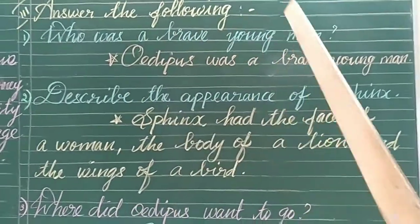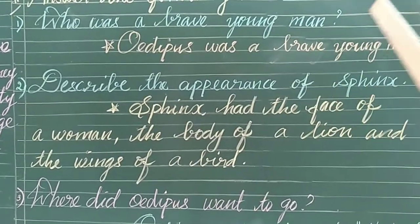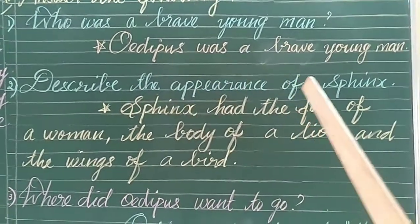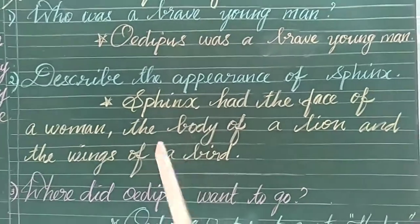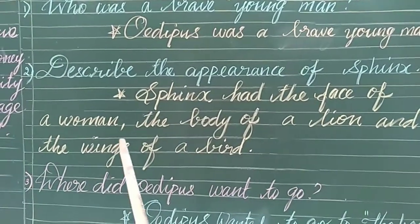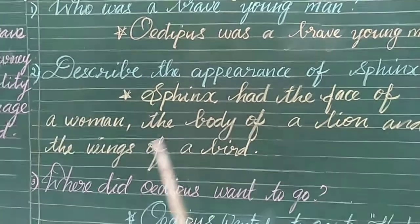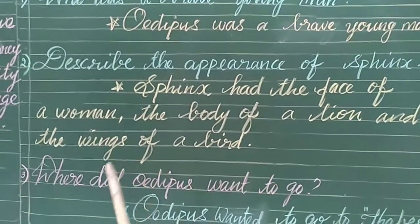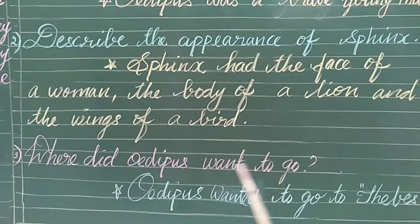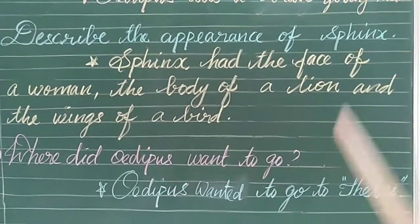See here the last Roman: answer the following. Who was a brave young man? Oedipus was a brave young man. Describe the appearance of Sphinx. Sphinx had the face of a woman, the body of a lion, and the wings of a bird. Where did Oedipus want to go? Oedipus wanted to go to Thebes.